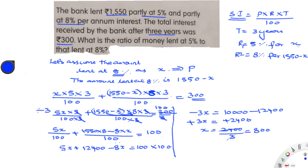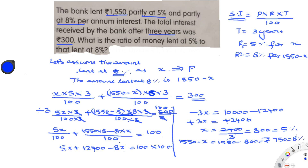So x is 800 rupees, which is the amount lent at 5%. The amount lent at 8% is 1550 minus x, that is 1550 minus 800, which equals 750 rupees. So 800 rupees was lent at 5% and 750 rupees was lent at 8%.